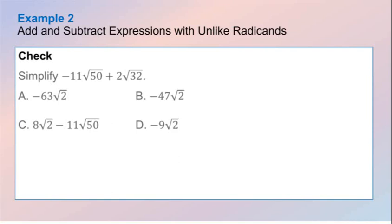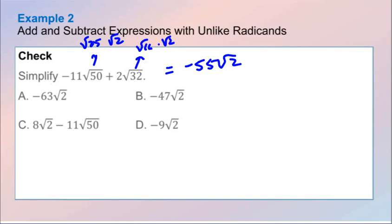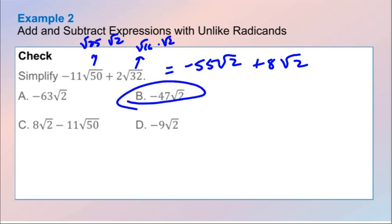We have negative 11 square root of 50 plus 2 square root of 32. I can break down 50 as the square root of 25 times the square root of 2, which gives us 5 times 11, which is negative 55 square root of 2. For 32: that's the square root of 16 times the square root of 2. The square root of 16 is 4, and 4 times 2 is 8 square root of 2. Negative 55 plus 8 is negative 47 square root of 2. That would be choice B.